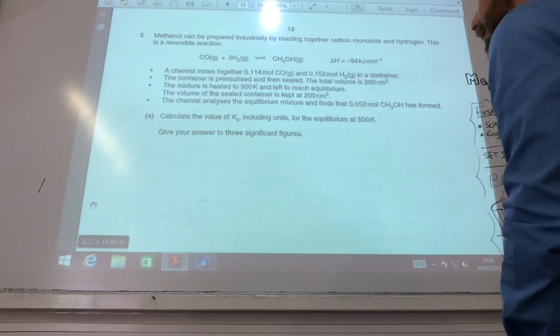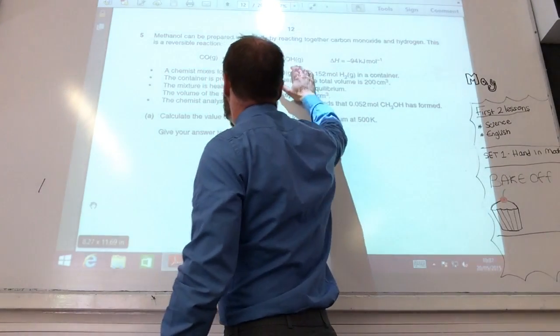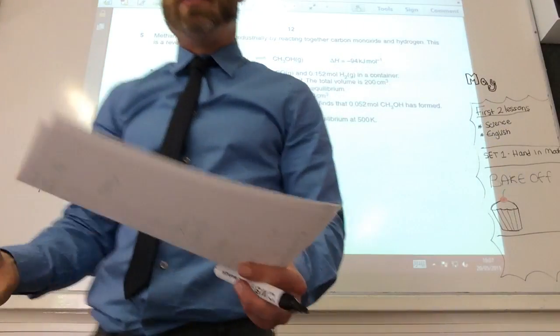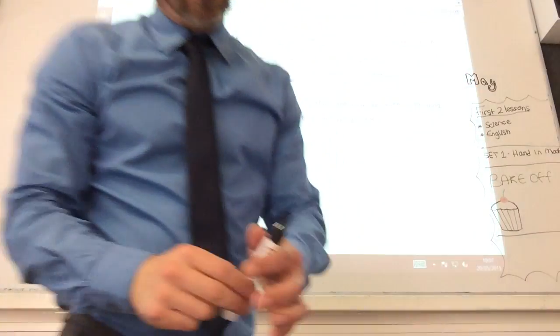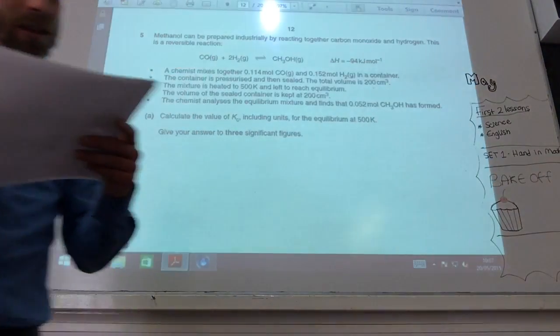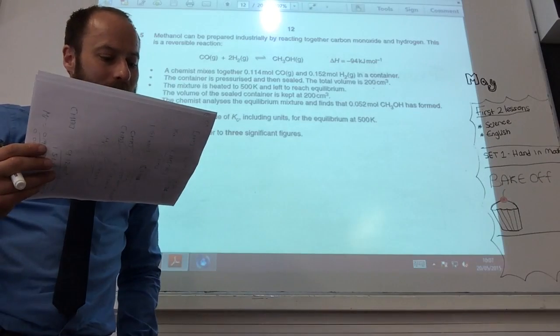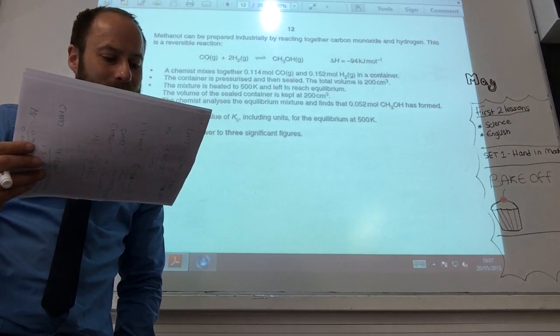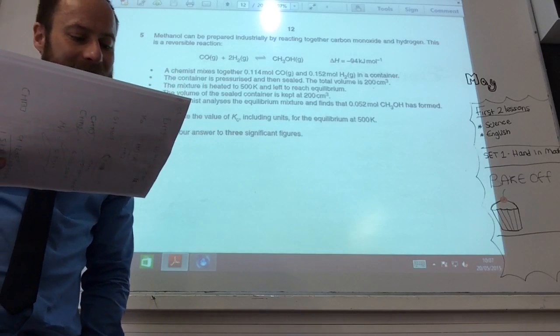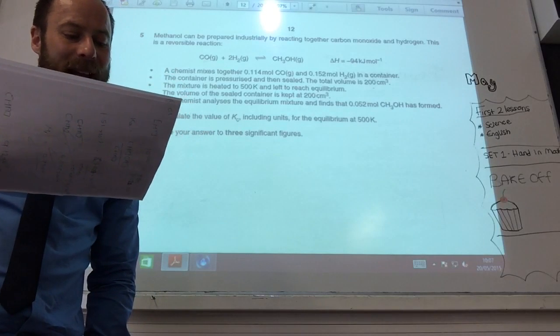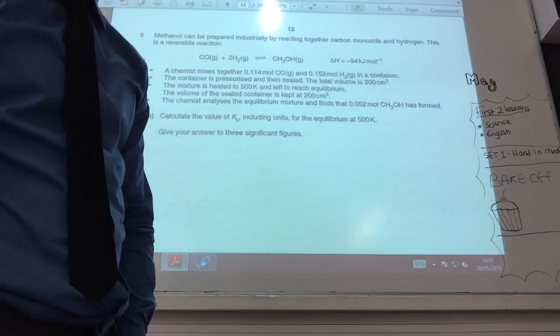Why, therefore, is it difficult to predict? Well, it's difficult to predict because temperature's pushing it that way, but pressure's pushing it that way. Higher pressure shifts to the right. Higher temperature shifts the position of equilibrium to the left, because the forward reaction is exothermic. Therefore, Kc decreases, and therefore the relative effect of pressure and temperature is not known.